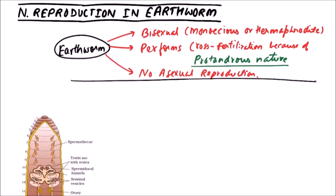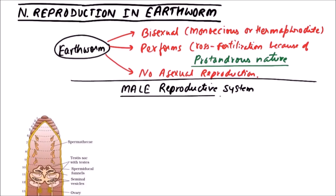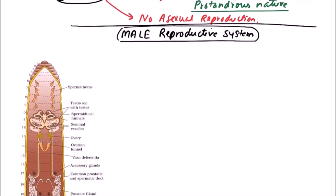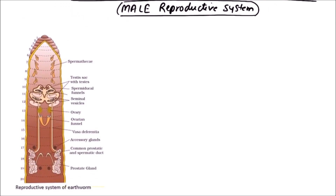Now first of all we will discuss the male reproductive system. Male reproductive system consists of testis with testis sac, spermiducal funnels, seminal vesicles, vas deferens, accessory glands, prostate glands and their ducts.